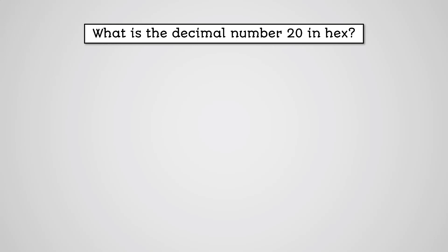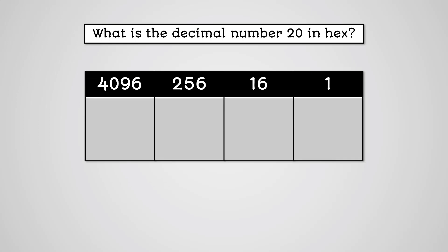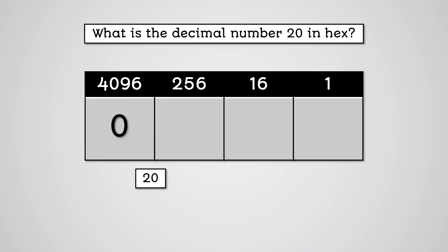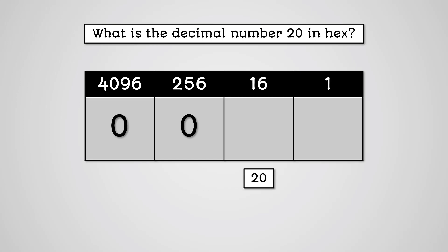Let's work out the hex value for the decimal number 20. Just like converting to binary, we must ask similar questions and follow a similar process. Will 4096 fit into 20? No, so we put a 0 in the 4096 column. Will 16 fit into 20? Yes — how many times? 1. So we put 1 in the 16 column.